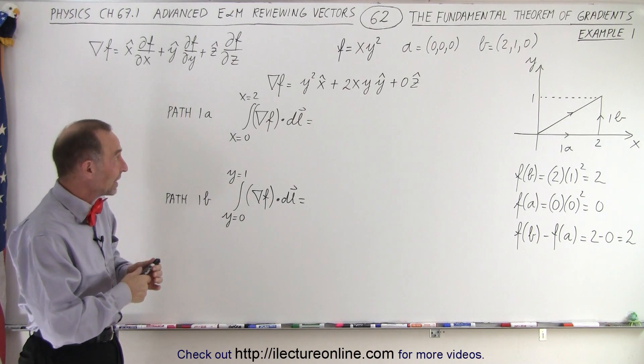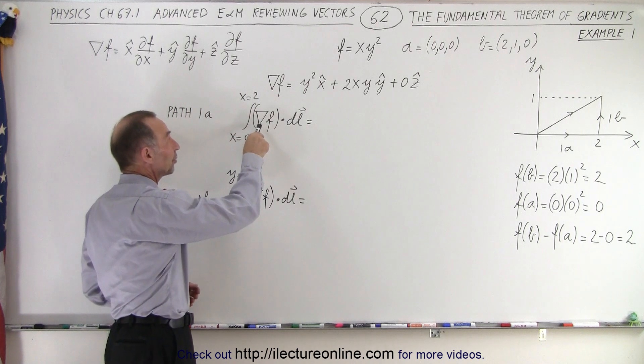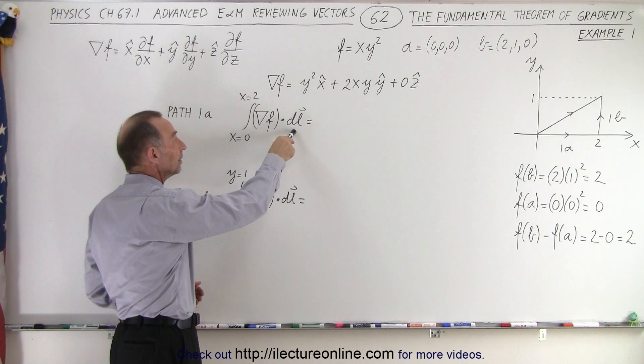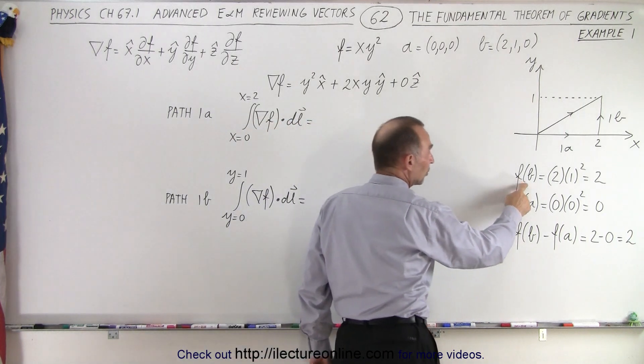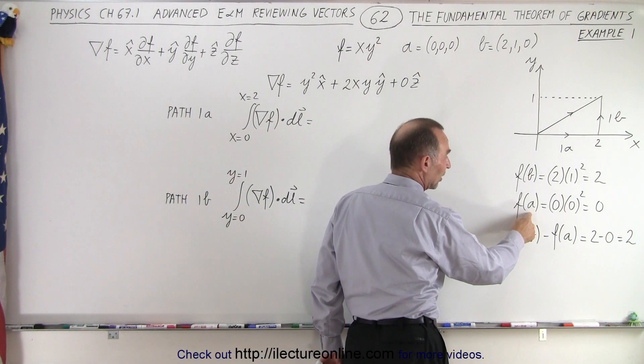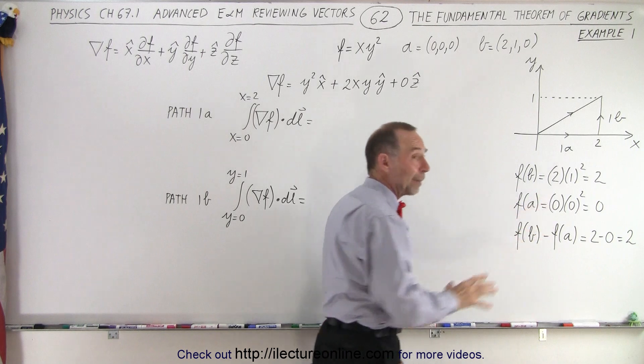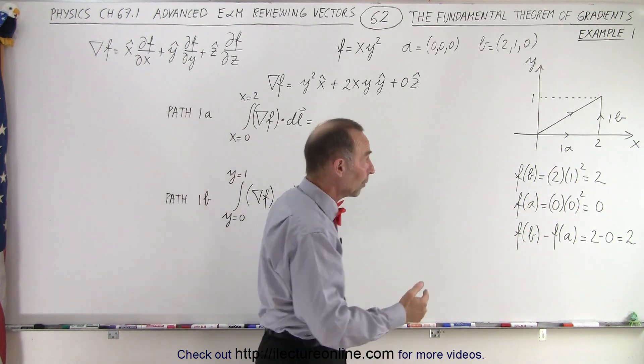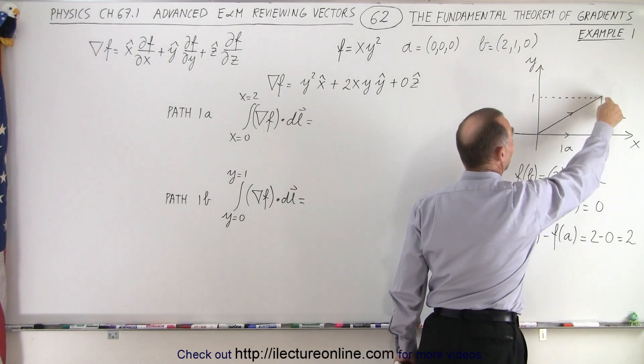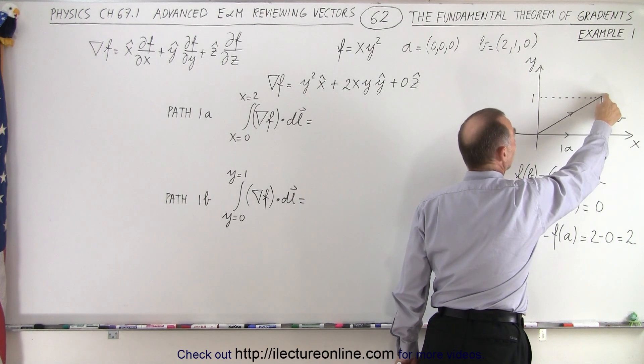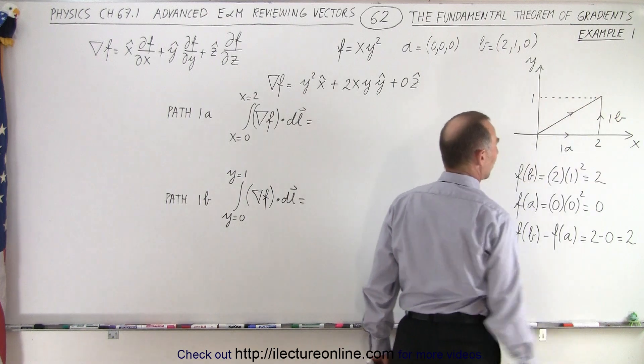So we remember that when we take the integral of the gradient of a function dot dl, we should get the same as when we evaluate the function at the end point minus when we evaluate the function at the initial point, regardless of the path taken from A to B. So what we're going to do here is travel from the origin to this point right here on the x-axis, and then up here where we have the point 2 for x and 1 for y.